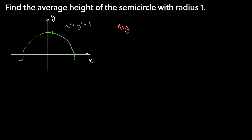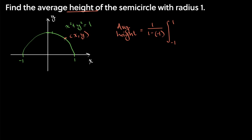We're finding an average height with respect to x. We know what this is — it's 1 over the length of our interval, which is going to be 1 minus negative 1, times our definite integral from negative 1 to 1. We want the average height, so if we take a point here, this would be x comma y. We're interested in the height — that's our y coordinate.